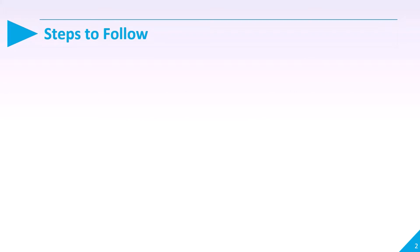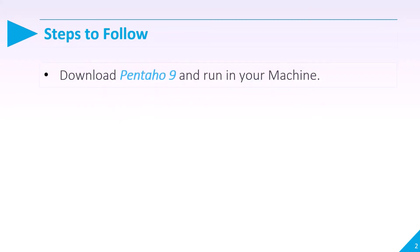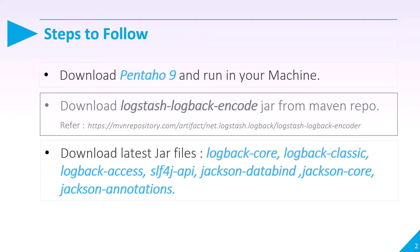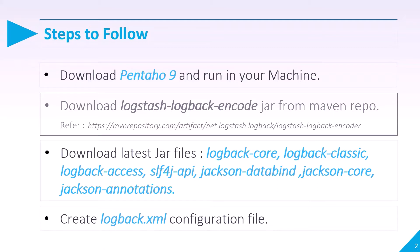Steps to be followed: You need to download Pentaho 9 and run it on your local machine. Download the Logstash logback encoder jar from Maven repository — the link is provided here or you can download from any other website. You also need to download other required jar files like logback-core, logback-classic, logback-access, slf4j, jackson-databind, jackson-core, and jackson-annotation.